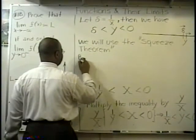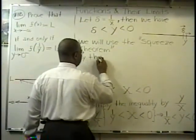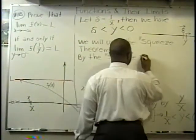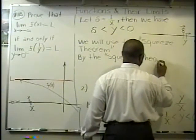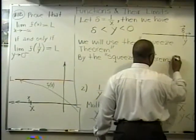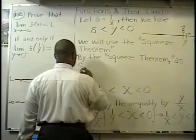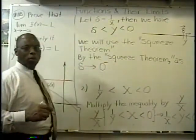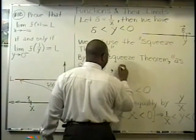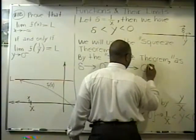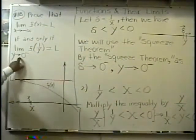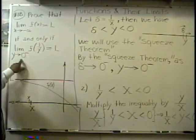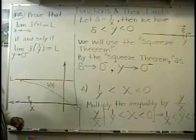We will use the squeeze theorem. That is the next step — very good. By the squeeze theorem, as delta approaches zero from the left, behold — Y is also approaching zero from the left. Isn't that what we want to show? Holy gee willikers — we're there! I'll be right back, I just want to erase this so we can wrap this up.